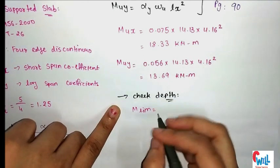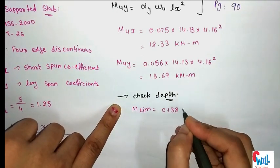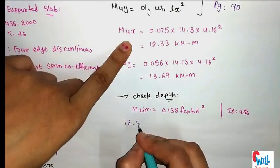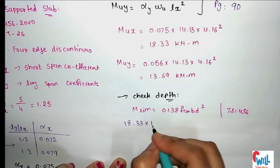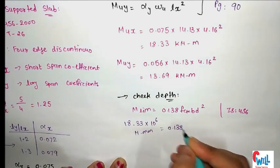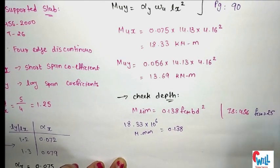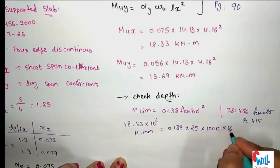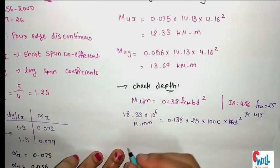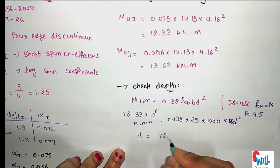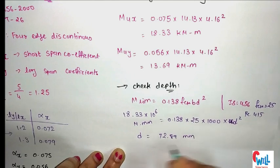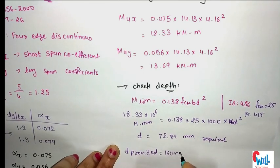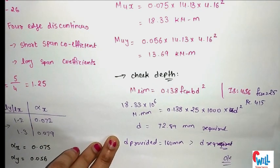Now let's check the depth. Formula: Mu,limit = 0.138 × fck × b × d². Taking maximum moment 18.33 × 10⁶ N·mm, with fck = 25, b = 1000 mm per meter width, d required = 72.89 mm. Since we have provided 160 mm which is more than required, the depth check is okay.